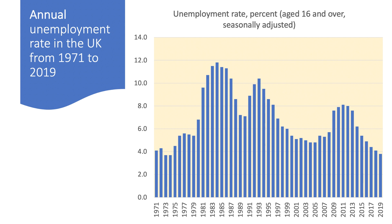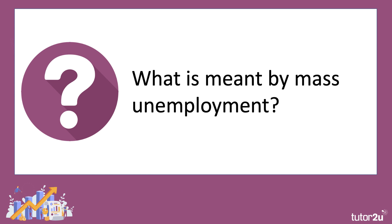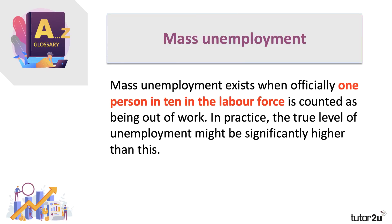So perhaps in the years to come, if we can get through the pandemic, if we can achieve some fast growth in 2021 and 2022, then perhaps unemployment can head back down to levels where the number of vacancies is pretty close to the number of people who've been out of work for, let's say, six months. A contrast to this — what do we mean by mass unemployment? Well, mass unemployment exists officially when one person in ten, 10 percent of the labour force, is measured as being out of work.